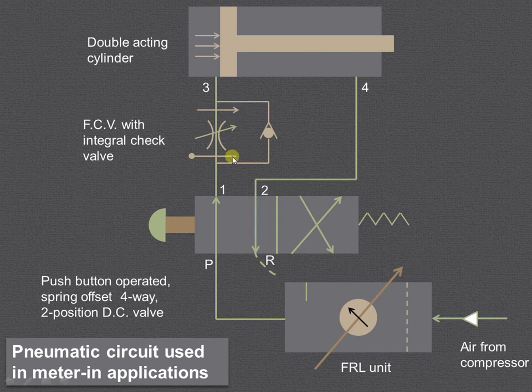This arrow indicates it is pressure compensated, and this is temperature compensated. This is a pressure and temperature compensated flow control valve with integral check valve. This is the double acting cylinder - air can be admitted from both sides.